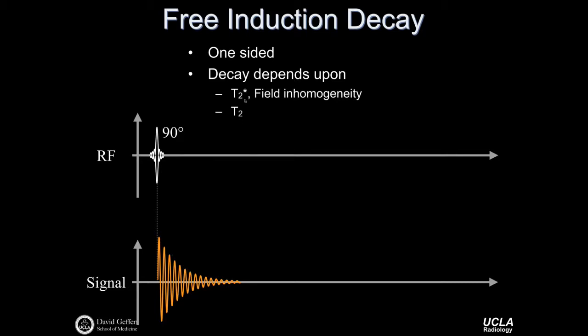That signal will decay as T2 star, or T2, and will also depend on underlying field inhomogeneities. This signal is maximum immediately after the RF pulse but decays relatively rapidly, and in a typical NMR system is gone within a couple hundred microseconds. Some of these T2 star losses, however, are reversible. There are T2 losses from spin-spin interactions which we can't recover, but losses due to external fields can in fact be reversed, giving us the ability to bring back part of this decaying signal.